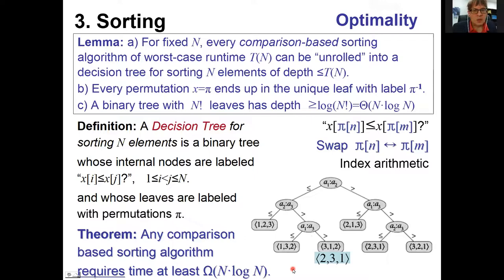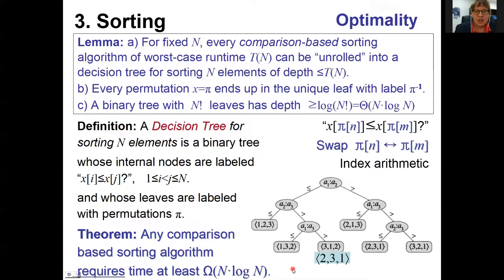We've reached a landmark in design and analysis of algorithms: we formally proved optimality of comparison-based sorting using elegant machinery from discrete mathematics. We've proved that merge sort and quick sort with linear-time median are optimal. We cannot beat running time N log N for comparison-based sorting.